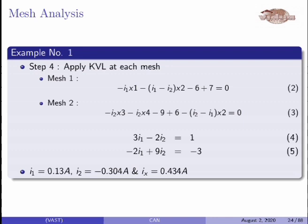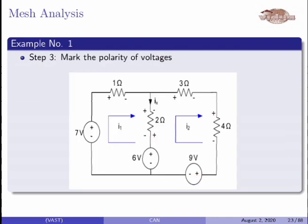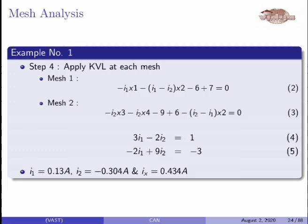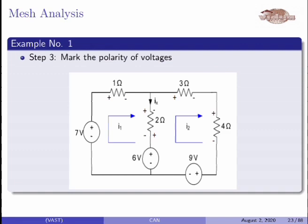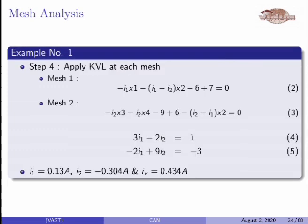Equation 2 is obtained for mesh 1 and equation 3 for mesh 2. Rearranging equations 2 and 3 gives equations 4 and 5. These two equations contain two independent variables, I1 and I2. After solving, you get I1 as 0.13 ampere and I2 as minus 0.304 ampere. From the circuit, Ix is the current through the 2-ohm resistance, so Ix equals I1 minus I2, which is 0.434 ampere.